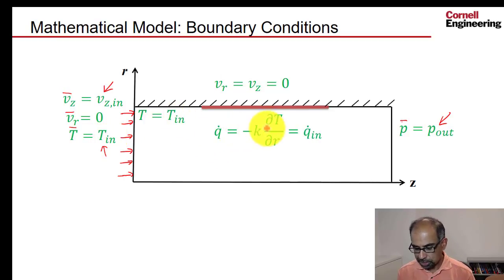The second part of the domain, there is a constant heat flux being added. And that's known. So this value is known from the experiment. This value is also known from the experiment.